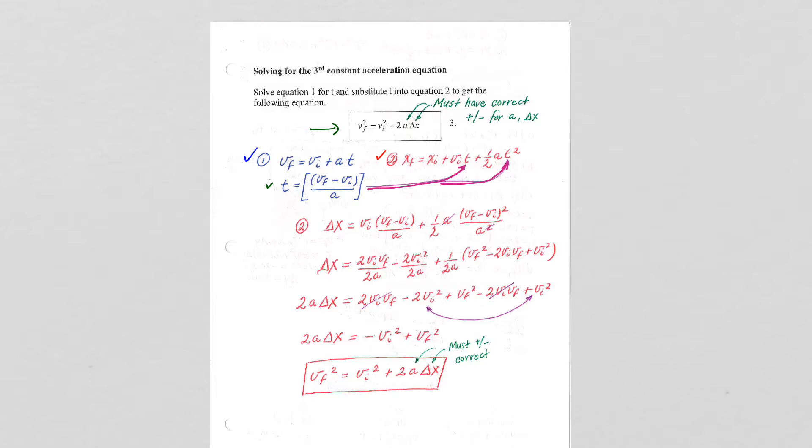But the a and the delta x must have the correct positive or negative when we have numbers to plug in and we're going to use this to problem solve. You need to know whether the acceleration is positive, meaning in the forward direction, or negative in the backward or down direction, and whether delta x is positive, meaning the displacement was forward, or delta x was negative, meaning the displacement was backwards.